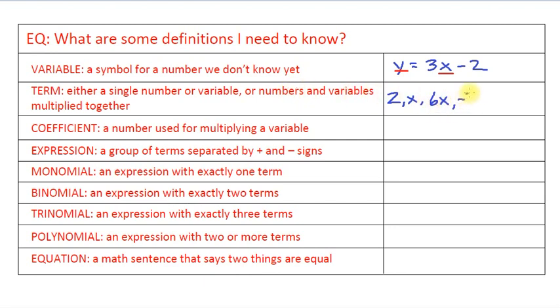We could also have negative values like negative 3t, a number and a variable multiplied together. And here's another one that can get pretty complicated: 4xy squared z cubed. This is just a combination of a number and a bunch of variables, but they're all multiplied together. So this would be considered a single term.